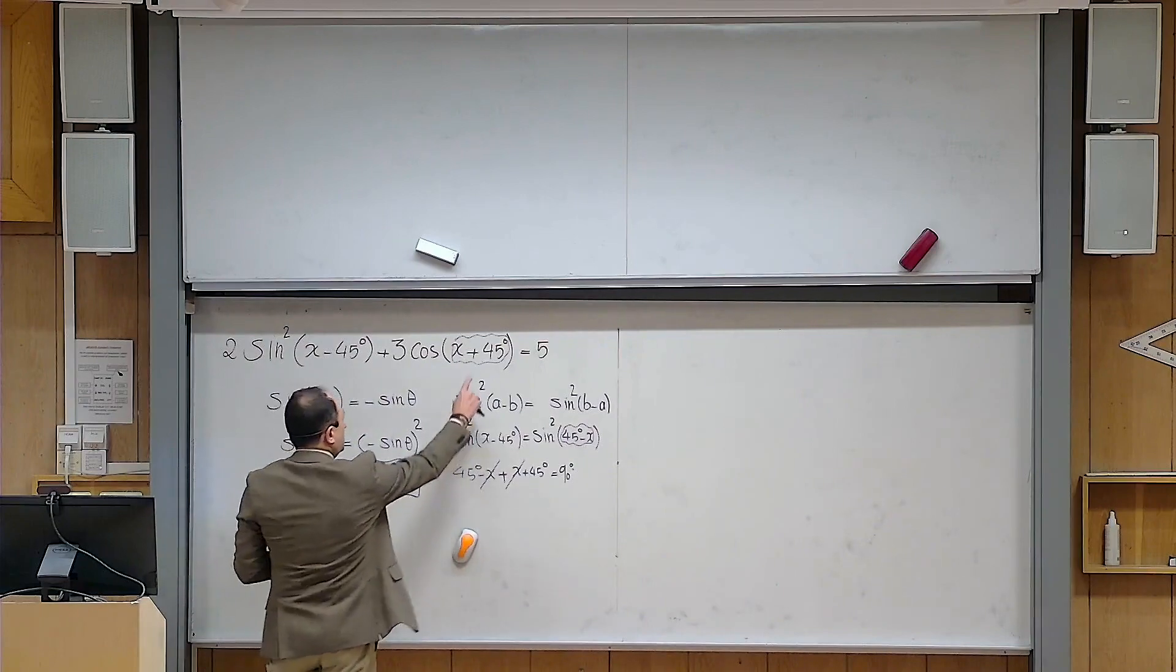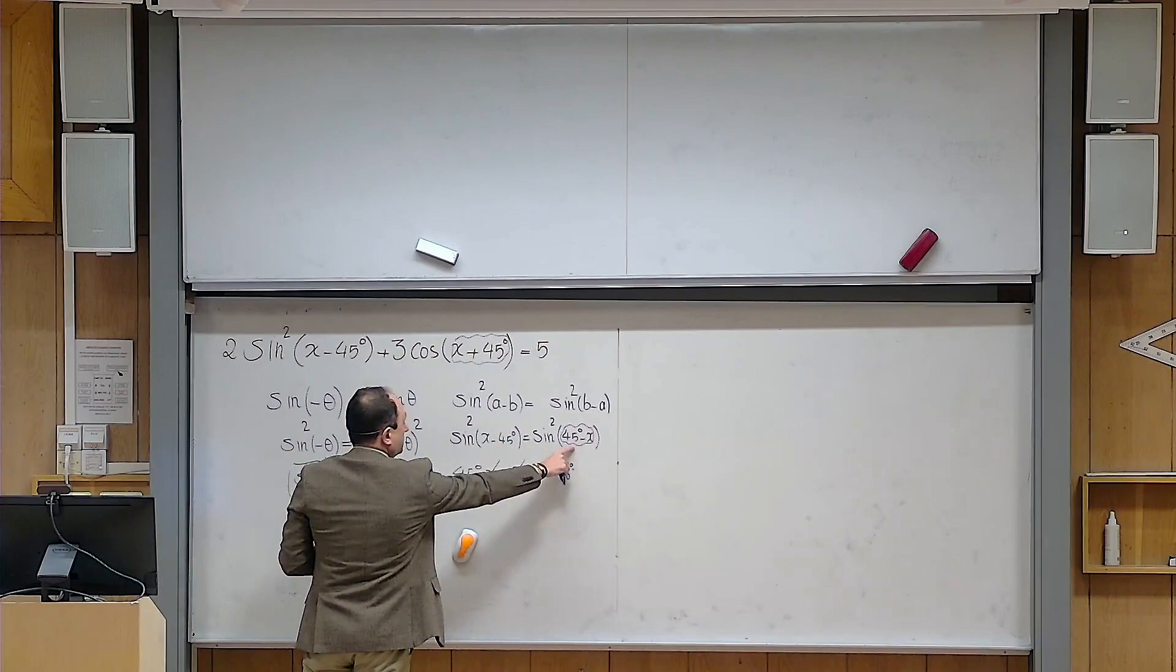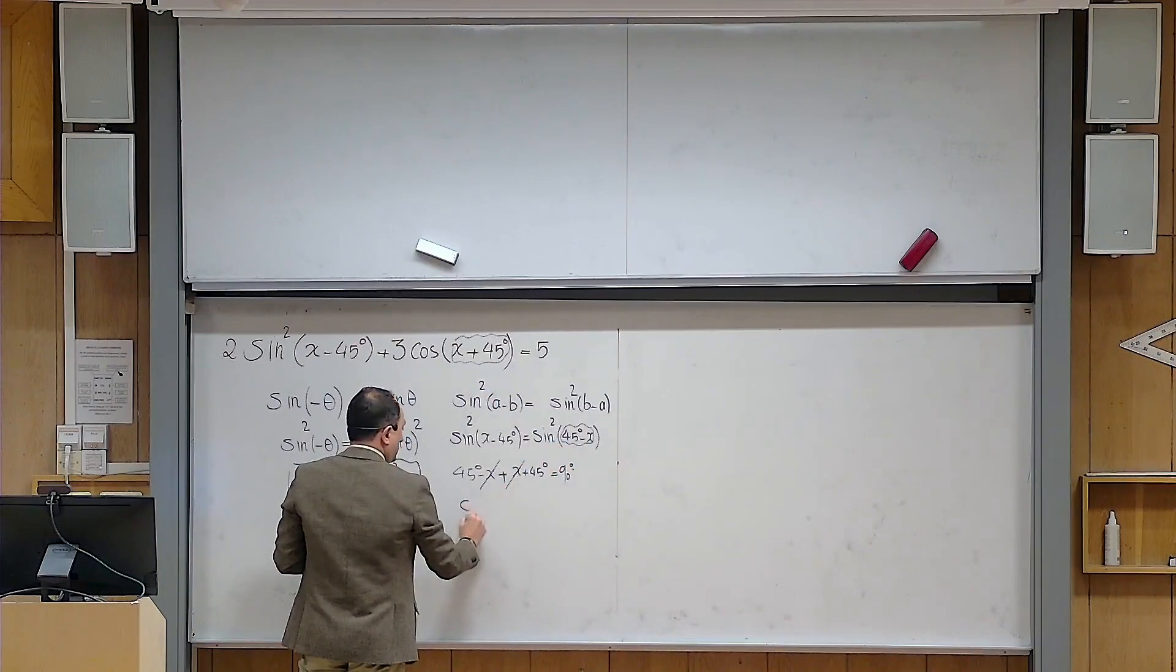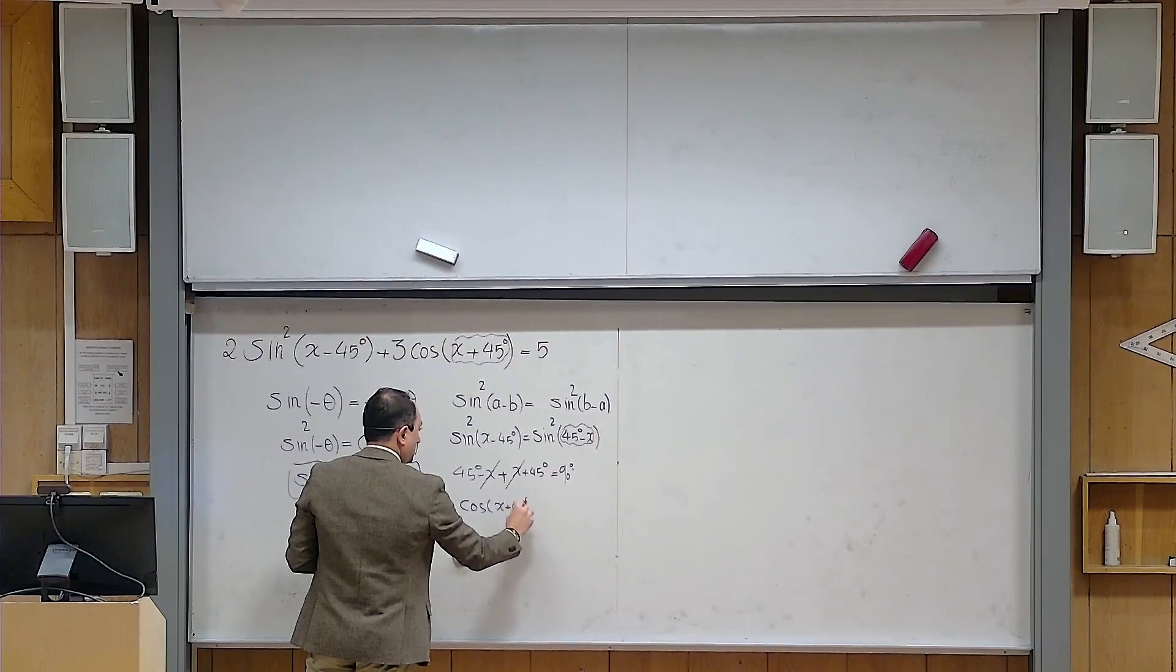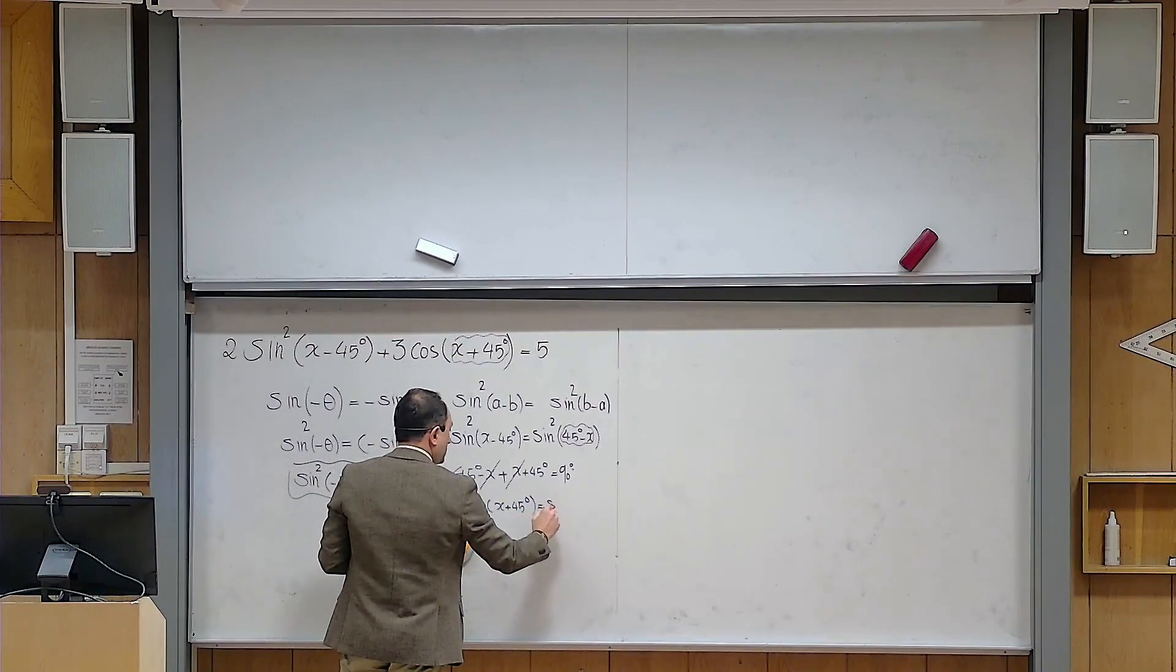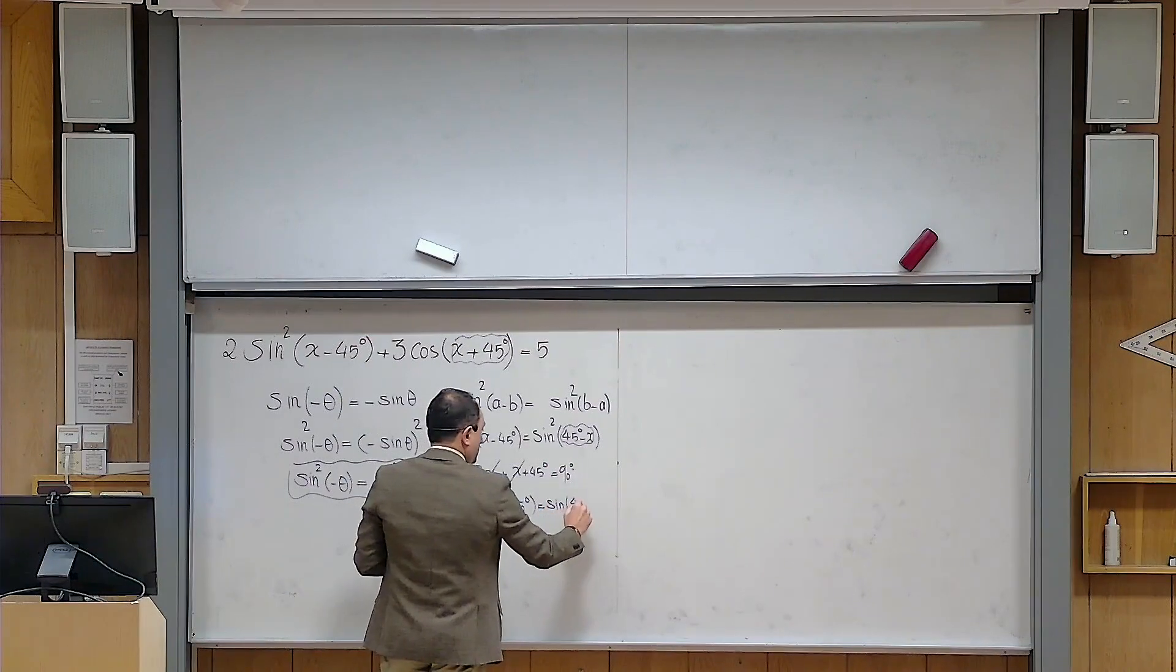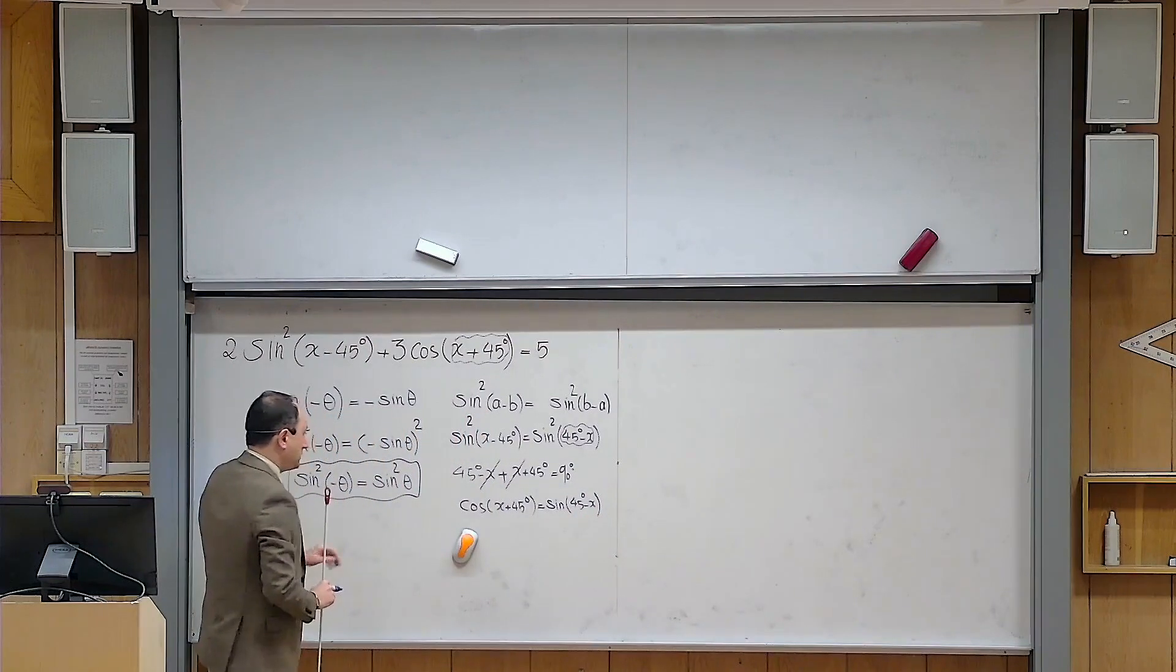So now hopefully you understand what is going on. For example, because this angle and that angle are complementary, cosine of x plus 45 degrees equals sine of 45 degrees minus x.